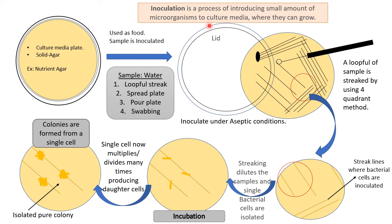The nutrient agar acts as food, and we inoculate our sample onto it. Inoculation is the process where we introduce small amounts of microorganisms to culture media where they can grow. Even tap water contains different kinds of microbes, so even a loopful — a very small amount of water — will contain hundreds of microbes. There are four different methods for inoculation: using a loop to streak, spread plate, pour plate, or a swab dipped in the sample to streak on the nutrient agar plate.